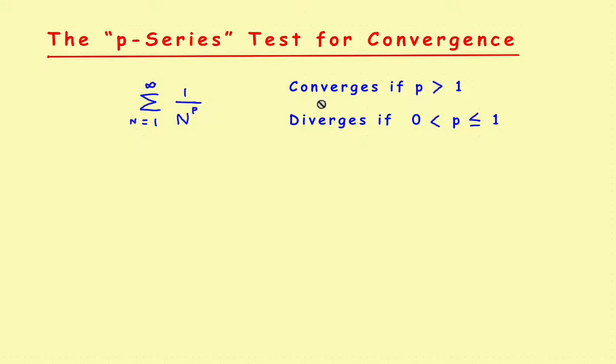The way it works is: if p is greater than 1, the series converges. If p is less than or equal to 1, then the series diverges. So it's really fairly straightforward.